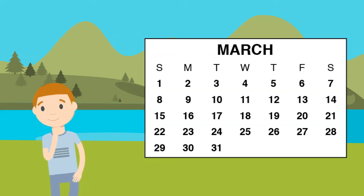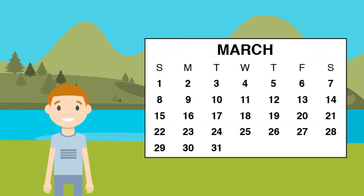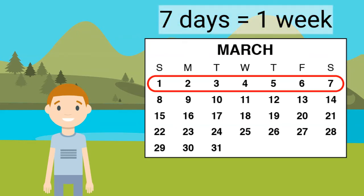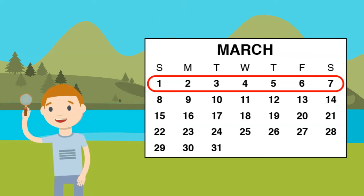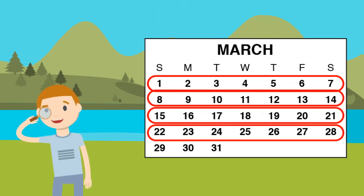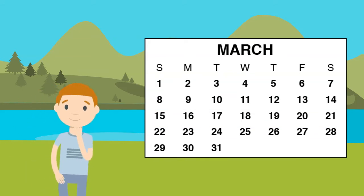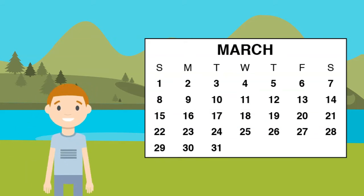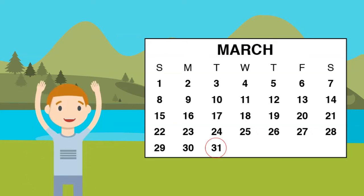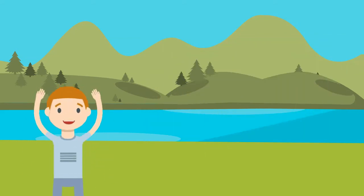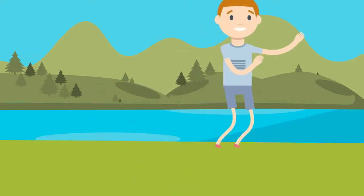Saturday is always the last day of the week. After Saturday, a new week begins with Sunday. Did you notice how many days are in a week? That's right — there are always seven days in a week. In this month of March, there are four full weeks with three days left over. What is the last day of the month of March? Yes, the 31st is the last day of March. The day after the 31st starts a brand new month.